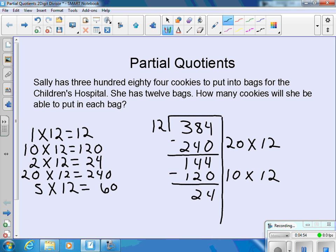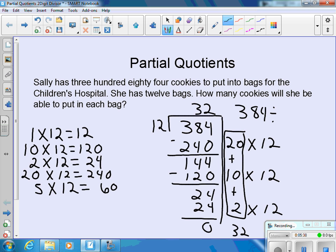We go to our cluster problems and we see 2 groups of 12 is exactly 24. So now we have used all 384 of our cookies and we can find out how many cookies Sally is going to be able to place into each of the bags. So we go over here and we combine, add up the number of groups you are able to use, and we see 20 plus 10 is 30 plus 2 more is 32. So Sally will be able to place 32 cookies in each bag. We can also represent the problem as 384 divided by 12 equals 32.